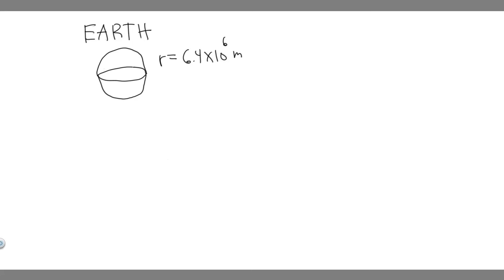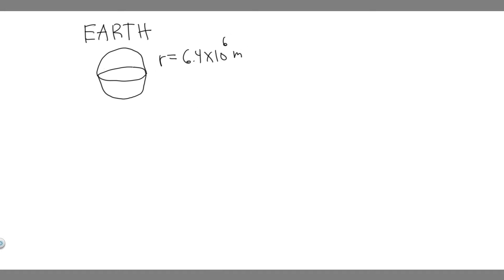In this problem we're told: what is the period of rotation of the earth in seconds, what is the angular velocity of the earth, and given that the earth has a radius of 6.4 times 10 to the 6 meters at its equator, what is the linear velocity at earth's surface? We're going to be solving for a bunch of different things here, but let's go ahead and start with A.